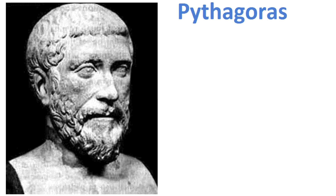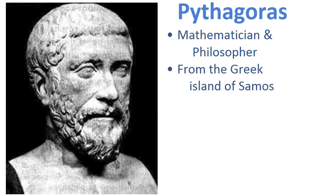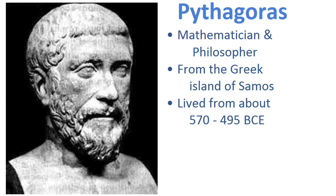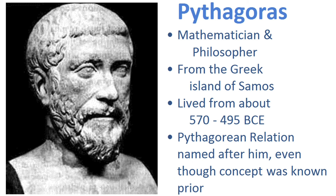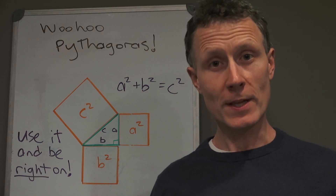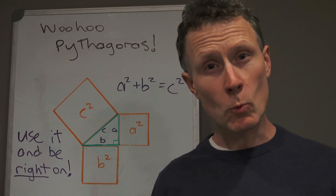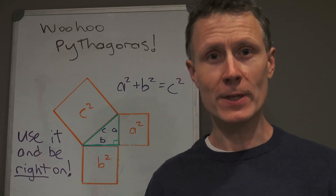Before wrapping up, let's talk about where the name comes from. The Pythagorean relation is named after Pythagoras, a Greek mathematician and philosopher from the island of Samos in the Aegean Sea who lived about 2,600 years ago. Interestingly, there's evidence that many other cultures — the Egyptians, people in India, in China, and elsewhere — knew about this concept long before he lived. That's an introduction to one of the most well-known ideas in mathematics, the Pythagorean relation.